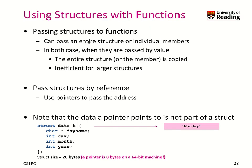Let's look again at how we use structures with functions. When we pass a structure object to a function by value, the entire structure is copied. That is inefficient for larger structures. Typically what you find in C code is that structures are passed by reference, which means we use pointers.